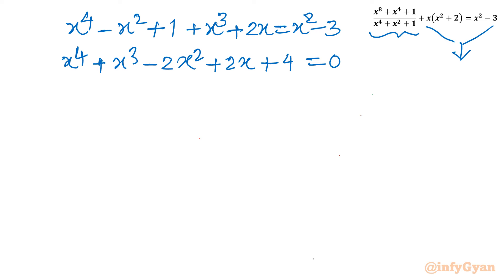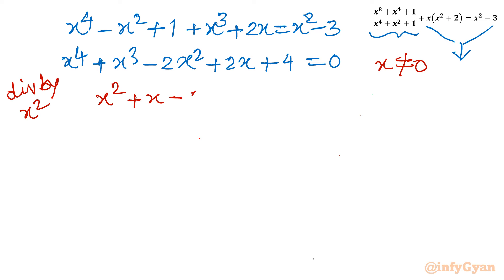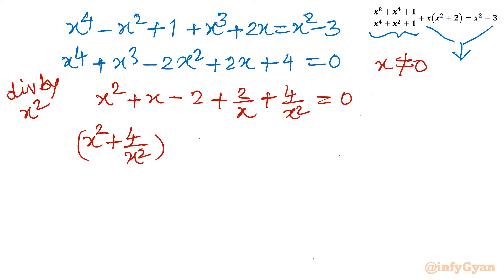Now you can see the coefficients suggest this is a reciprocal equation. I will divide this equation by x², noting x is non-zero — if x = 0 then 4 = 0, which is false. Dividing gives x² + x - 2 + 2/x + 4/x² = 0. I will group the first and last terms together, and the second and second-last terms, with the constant -2 as is.